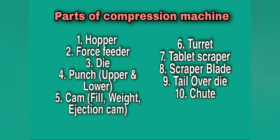You can see here the basic parts of the compression machine. One of them is the hopper, then force feeder, die, punch — which may be upper punch and lower punch — cam. There are mainly three types of cam: fill cam, weight cam, and ejection cam. Then turret, tablet scraper, scraper blade, tail over die, and chute.